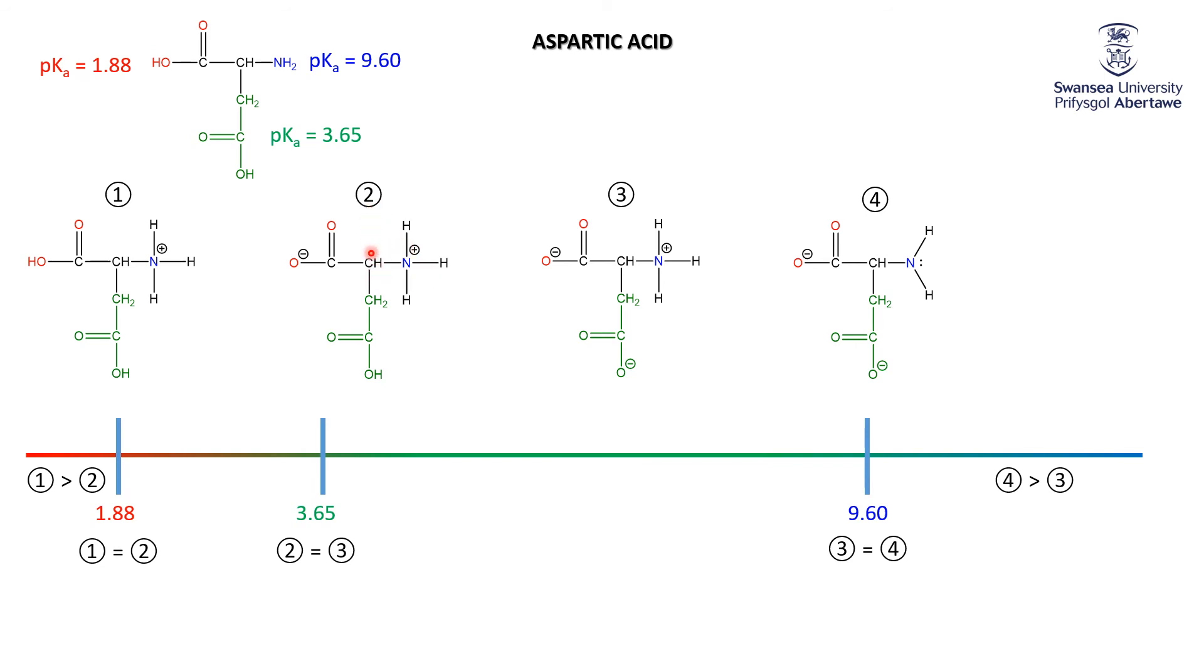Therefore, the isoelectric point, where most everything is in the two form, is not going to be at a neutral pH. It's going to be between 1.88 and 3.65—in other words, at about 2.77.